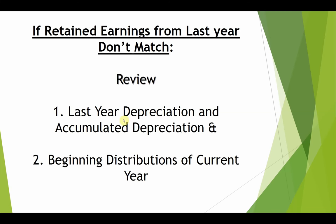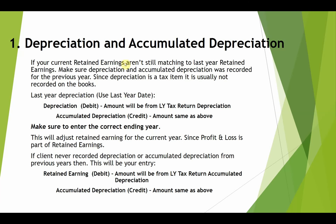What if the numbers don't match? Here are two items that are typically the reason: last year's depreciation and accumulated depreciation, and beginning distributions for the current year. Since depreciation is a tax item, many accountants forget to record it in their client's books after the tax return is completed. Typically the tax return tells the books what the tax depreciation amount is so we can make adjustments. This error from last year will have an effect on our retained earnings for the current year.